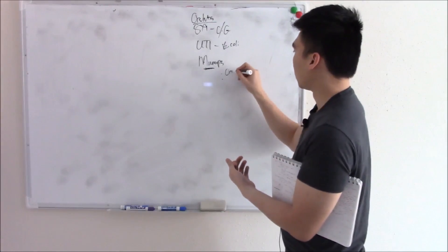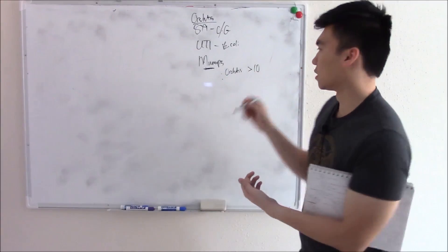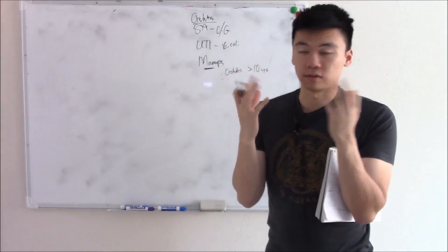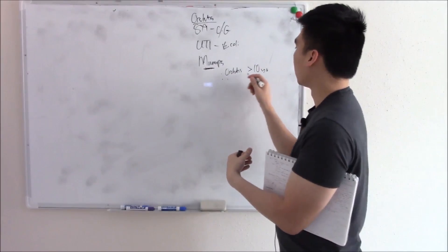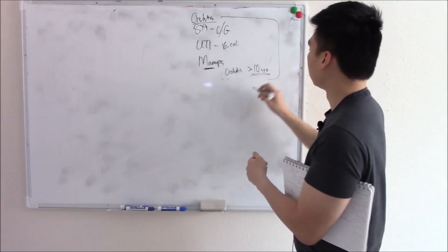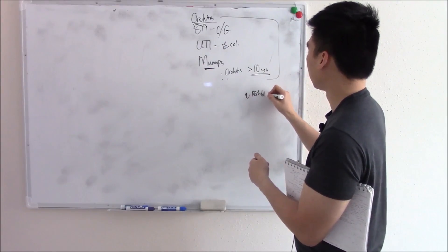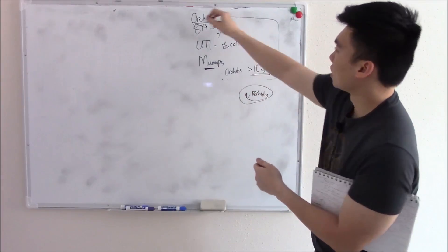Nor am I sure why it spares children. So orchitis in mumps, you only see it in teenagers, so people over 10. In kids with mumps, you have the classical findings. But after 10, you're predisposed to orchitis and all these things decrease fertility as you would expect. So know these well.